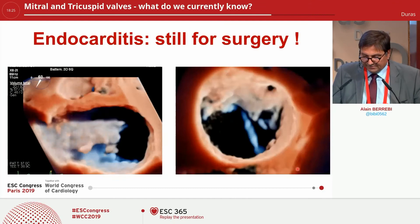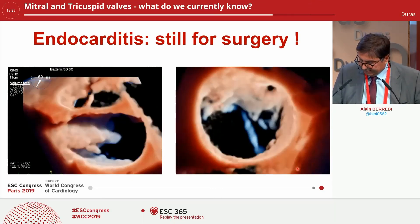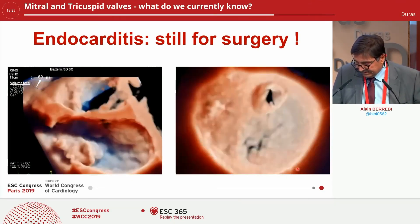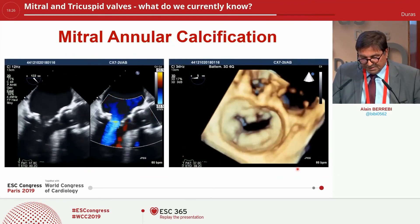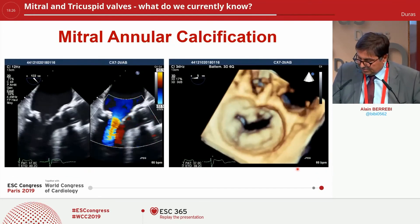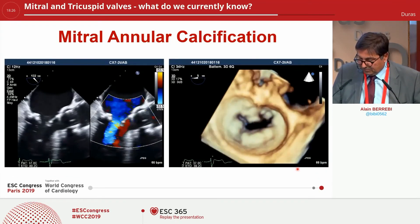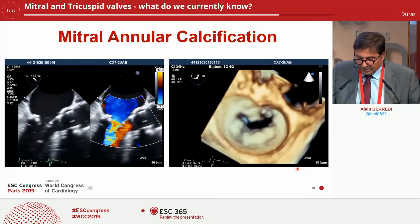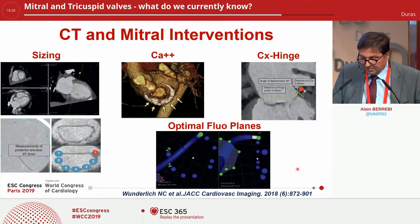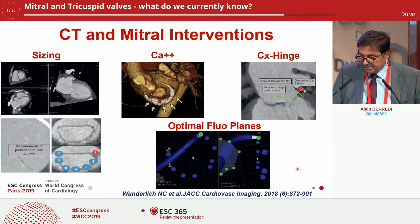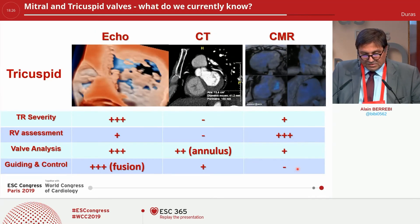Still, we have the indication for surgery, like endocarditis, for sure. And for mitral annular calcification, it is also a contraindication for Cardioband, which can be very well assessed by 3D echo and with a CT scan, where the indications for CT scan are summarized in this slide.